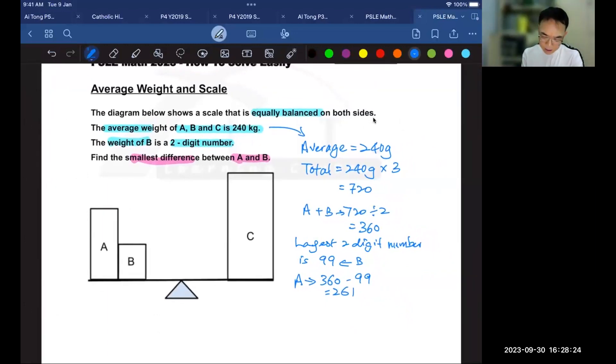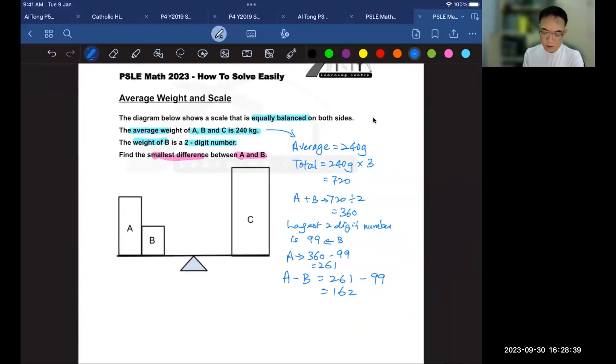and since B is 99, the difference of A minus B is 261 minus 99, which gives 162. So 162 grams is the smallest possible difference.